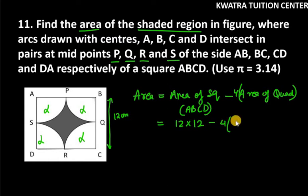Area of 1 quadrant will be theta over 360 into pi R square. We know that in a quadrant the angle formed is 90 degrees.